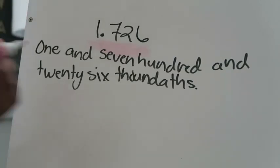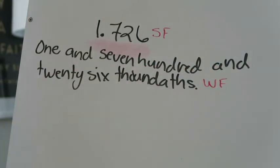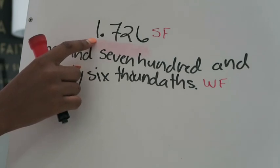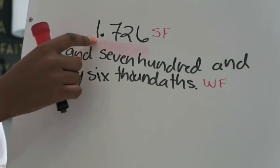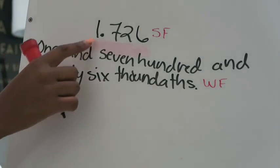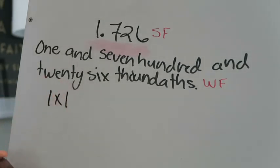So to recap: the first way is standard form, and the second is word form. The last one is expanded form, which can be a little tricky. When writing expanded form, you look at each place value position starting from the left and multiply each digit by its place value. Starting with the number one — it represents one whole — so we write 1 × 1.